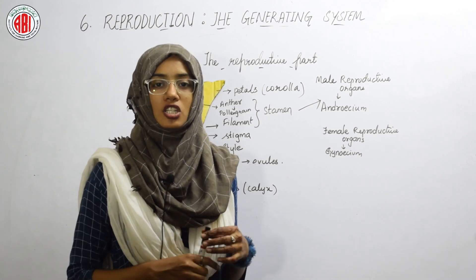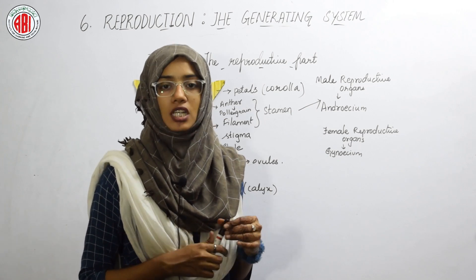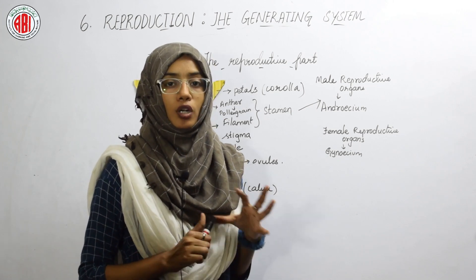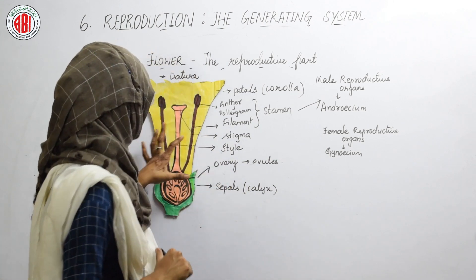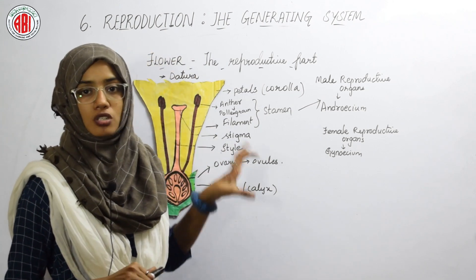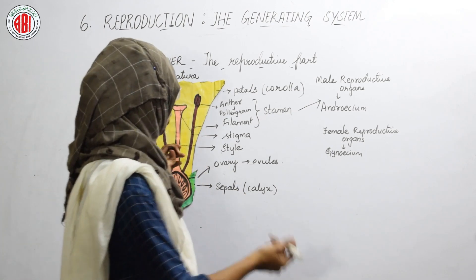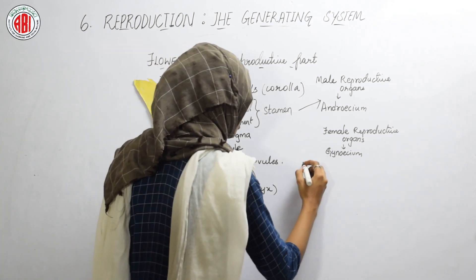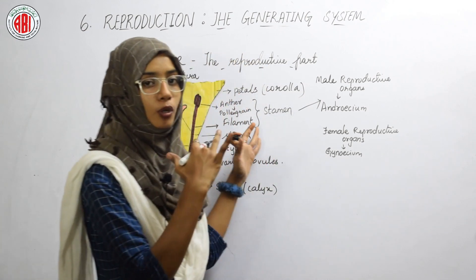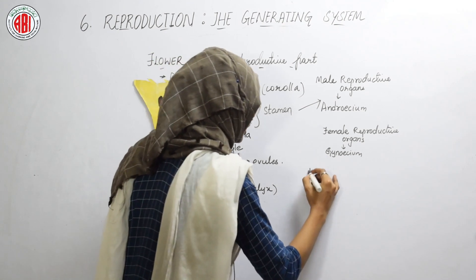For fertilization to take place, the male gametes must fuse with the female gametes. So the pollen grains, which are the male gametes, have to fuse with the ovules of the ovary. When pollen grains fuse with the ovary, fertilization takes place. The transfer of pollen grains to the stigma is called pollination.